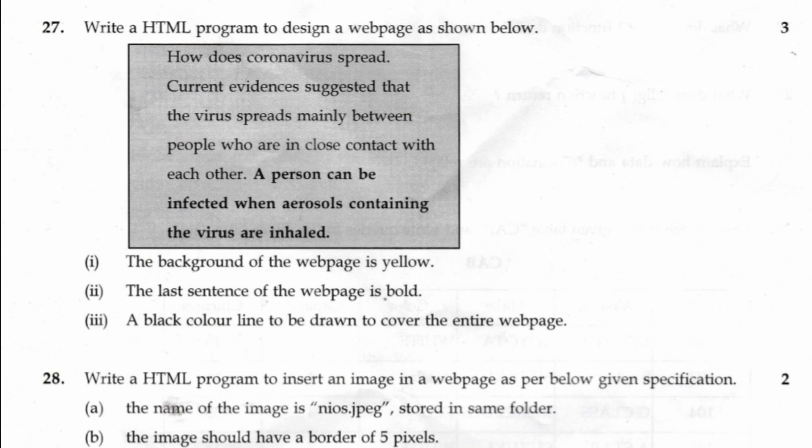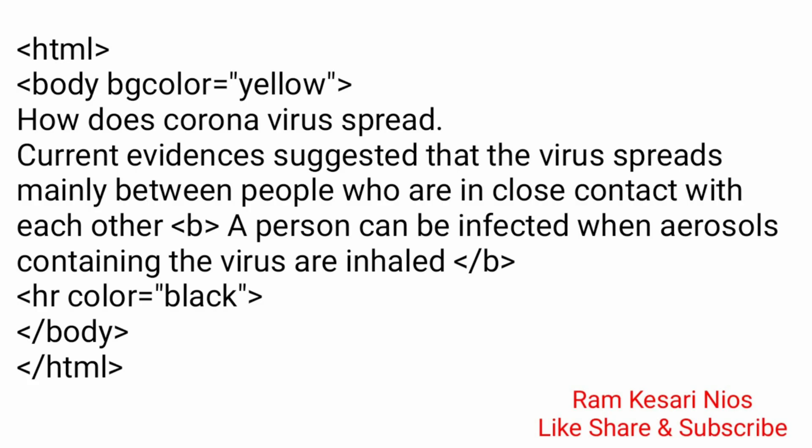Question 27: Write a HTML program to design a web page as shown below. 1. The background of the web page is yellow. 2. The last sentence of the web page is bold. 3. A black color line to be drawn to cover the entire web page. <HTML><body bgcolor="yellow">How does coronavirus spread? Current evidences suggested that the virus spreads mainly between people who are in close contact with each other.<b>A person can be infected when aerosols containing the virus are inhaled.</b><hr color="black"></body></HTML>